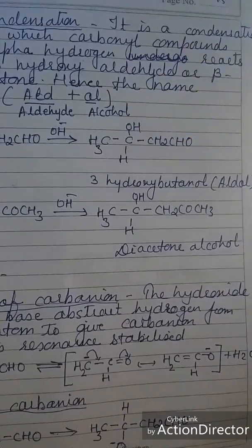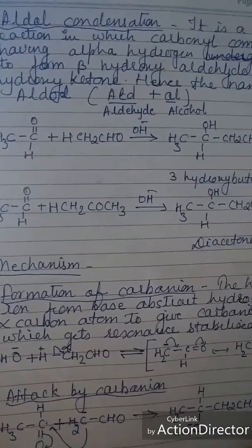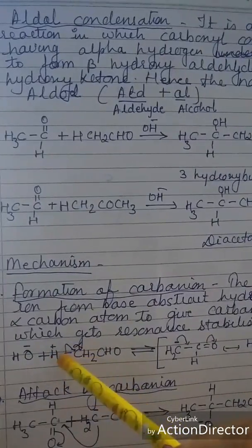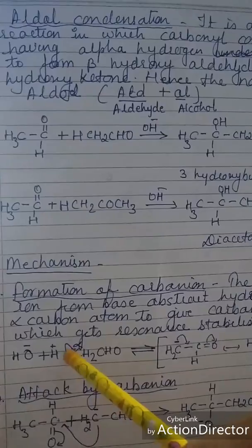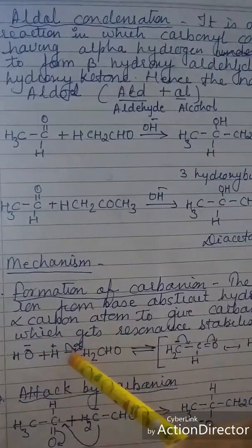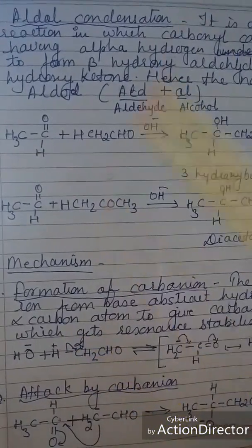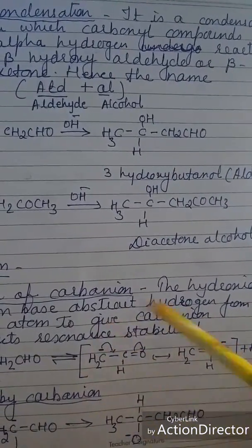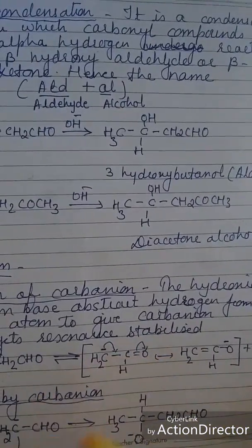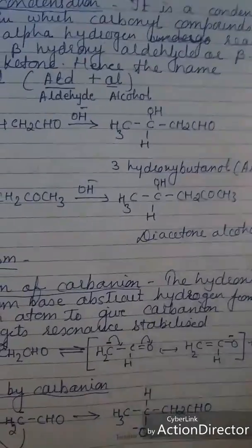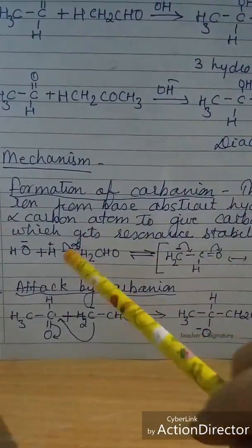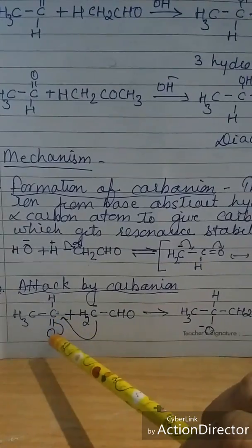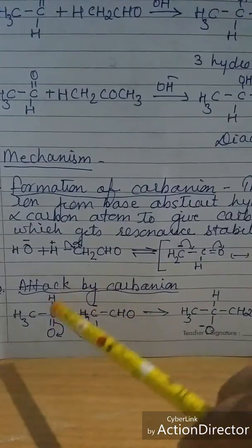Let us see the mechanism. First is the formation of a carbanion: the first aldehyde reacts with a base, which abstracts the alpha hydrogen. When this hydrogen moves, the bond shifts, giving a negative charge, forming −CH2CHO, that is a carbanion. This carbanion is resonance stabilized. Second, this carbanion acts as a nucleophile and attacks the second aldehyde molecule. The bond shifts, oxygen becomes negative and carbon becomes positive, so the carbanion attaches to the carbonyl carbon, forming a new intermediate.